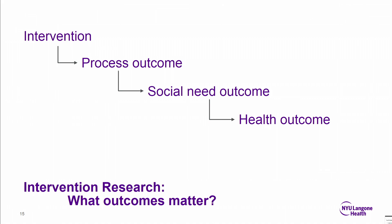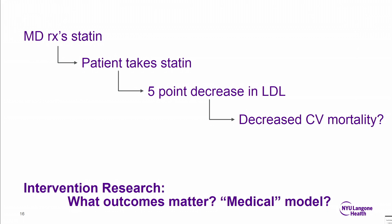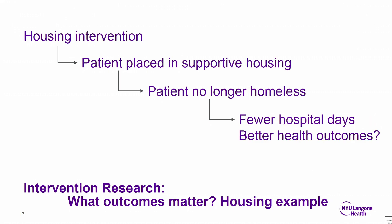Most of the research so far has been on process and social need outcomes with less on downstream health outcomes, as we've heard. I thought it might be useful to think about a more traditional medical analogy. Take, for example, a statin drug to decrease cholesterol. That might look like a doctor prescribing a statin, and then the process outcome there is that your patient takes the statin, and the intermediate outcome is, say, a five-point decrease in LDL. But ultimately what you care about as a physician and as a patient is how that might affect somebody's cardiovascular mortality or other outcomes that are important for patient health. Now contrast that a bit to an example with a social need.